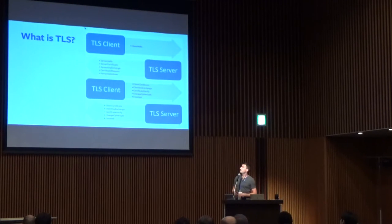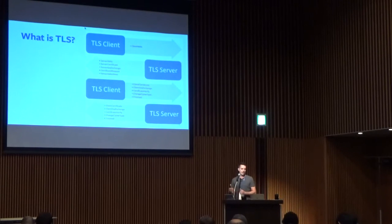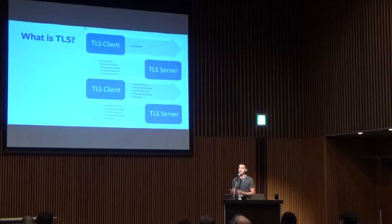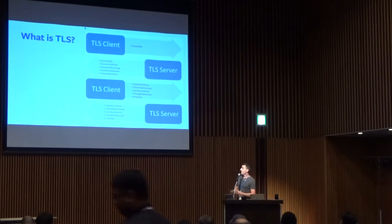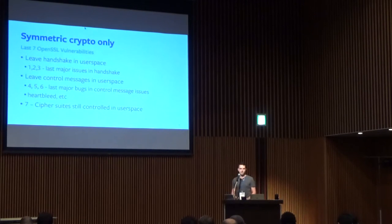So what is TLS? TLS is a security protocol. It has a handshake at the beginning — there are really two parts: the handshake, and then the record protocol that does symmetric encryption after the handshake, which is public-private key asymmetric encryption. Just like TCP, there is some sort of handshake at the beginning, of which there's a bunch of different options, and it's actually really quite complicated and changes quite a lot between different versions. So our approach was to essentially leave the handshake in user space.